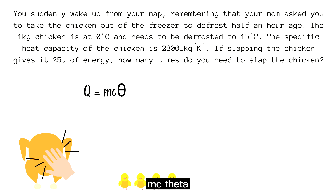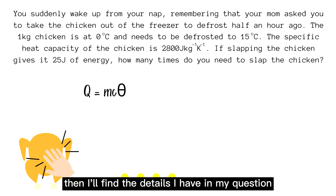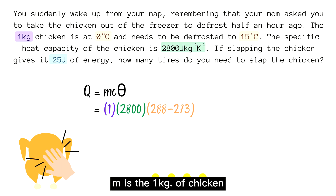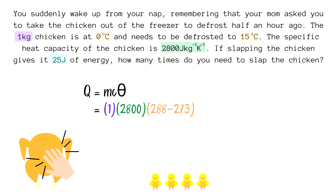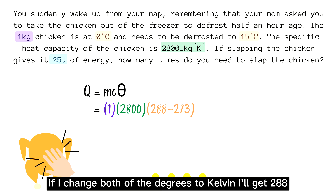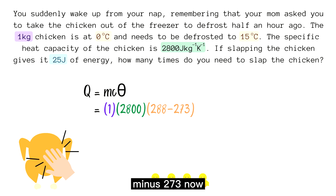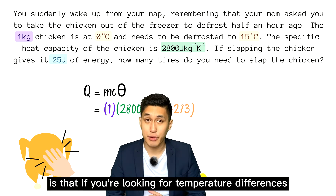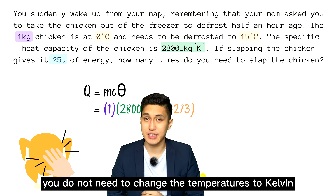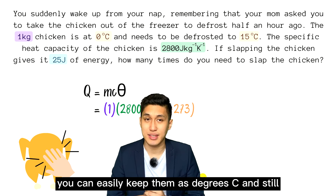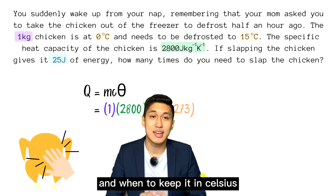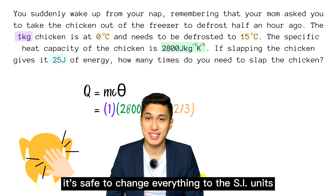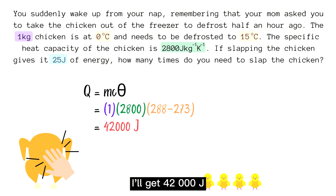So we know this is a specific heat capacity question, so I'm going to write down my formula: Q equals mc theta. M is the 1 kg of chicken. C is the specific heat capacity of 2800, and theta is the temperature change from 0 to 15 degrees. If I change both of the degrees to kelvins, I'll get 288 minus 273. One thing to keep in mind is that if you're looking for temperature differences, you do not need to change the temperatures to kelvins — you can keep them as degrees Celsius and still get the same answer. But if you're easily confused, it's safe to change everything to SI units. So if I put these values into the calculator, I'll get 42,000 joules.